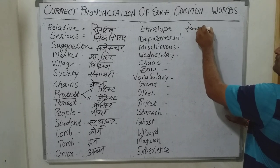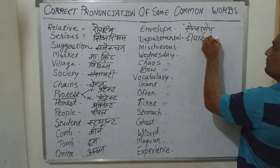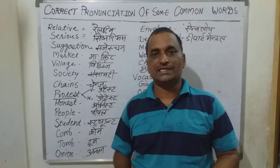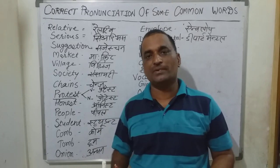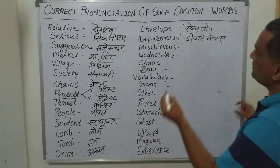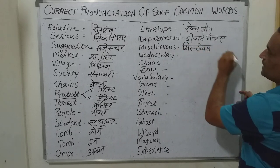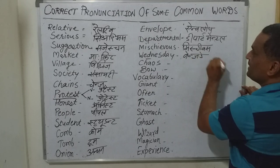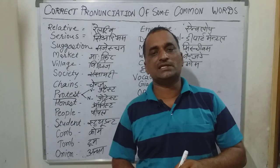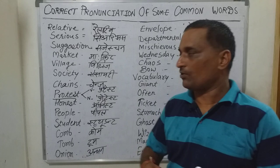The next word is 'envelope.' Then 'departmental' — the noun form is 'department' and the adjective form is 'departmental,' as in 'He went to a departmental store to buy some goods.' Next is 'mischievous' — it is pronounced 'mischievous.' Then 'Wednesday' — pronounced 'Wednesday.' And 'chaos' — meaning a condition of complete disorder — is pronounced 'chaos,' not 'chaoss.'